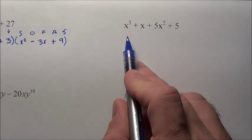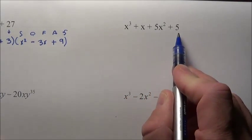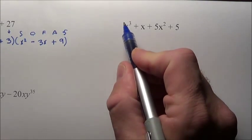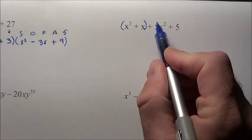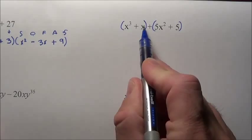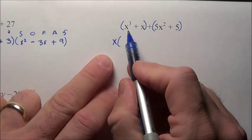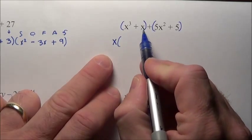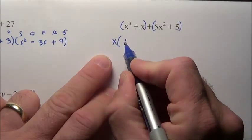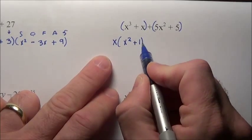The next problem is x cubed plus x plus 5x squared plus 5. As soon as I see 4 pieces, I know it's got to be factored by grouping. I'm going to group these pieces. He has x cubed and x — an x can be pulled out. x times what is x cubed? That's x squared. x times what gives you x? That's plus 1.